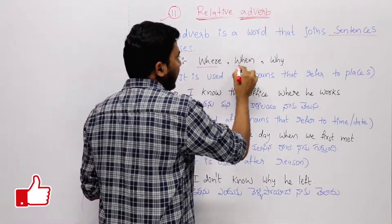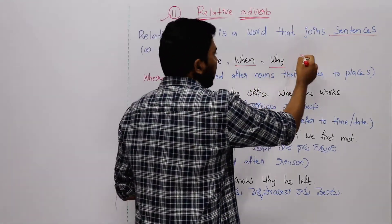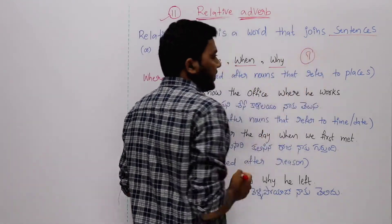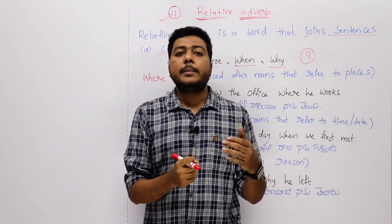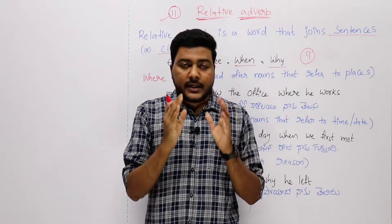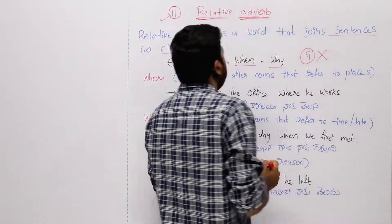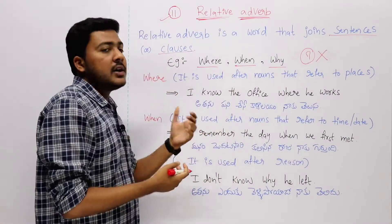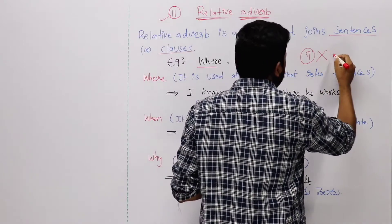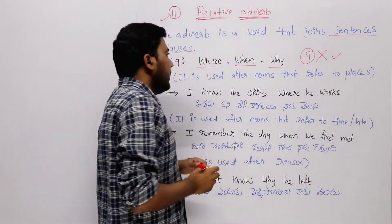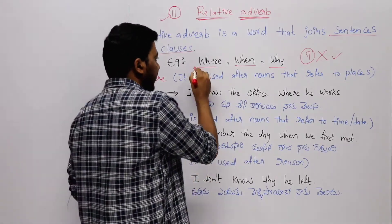Examples are where, when, why. These are also interrogative adverbs, but interrogative adverbs use question marks for asking questions. Here, we don't use them for questions. These relative adverbs connect different clauses or different sentences. Let me show you one by one. Examples will bring clarity.